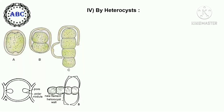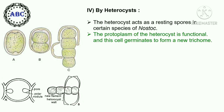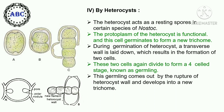Fourth, by heterocysts acting as resting spores: in certain species of Nostoc, the protoplasm of the heterocyst is functional and the cell germinates to form a new trichome. During germination, a transverse wall is laid down, resulting in the formation of two cells. These two cells divide again to form a four-celled stage known as a germling. This germling comes out by rupture of the heterocyst wall and develops into a new trichome.